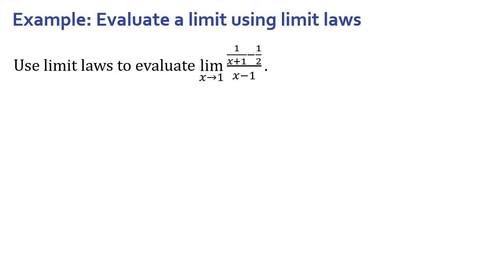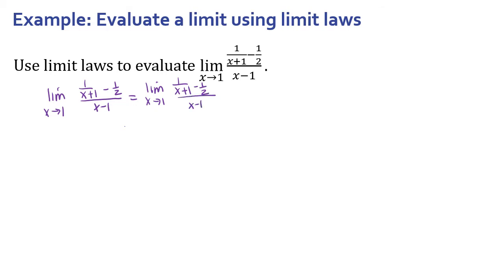Step one was to check if we're in indeterminate form — which we are. Step two was to find another way to write this expression so we can actually evaluate it. When we have a complex fraction, we need to simplify it — get rid of the fractions within fractions. The method I typically use is to multiply both the numerator and the denominator by the common denominator of the fractions within. We can see we have x plus 1 and 2 as denominators of the inner fractions, so the common denominator is going to be 2 times x plus 1.